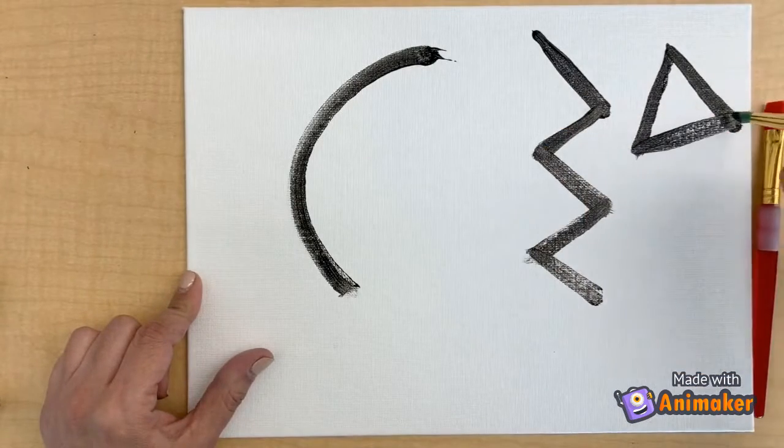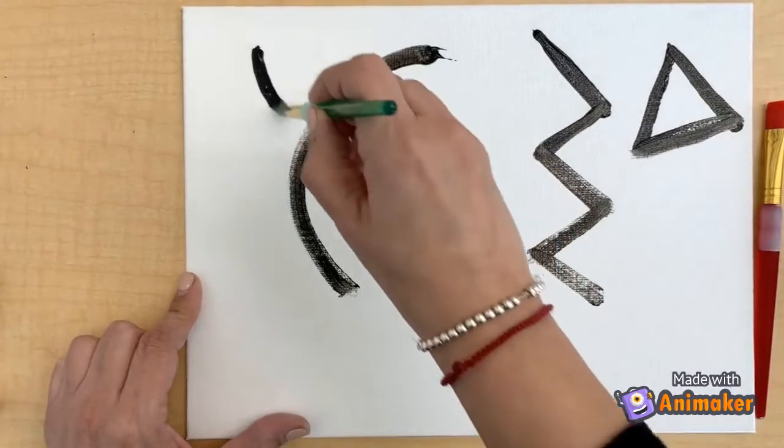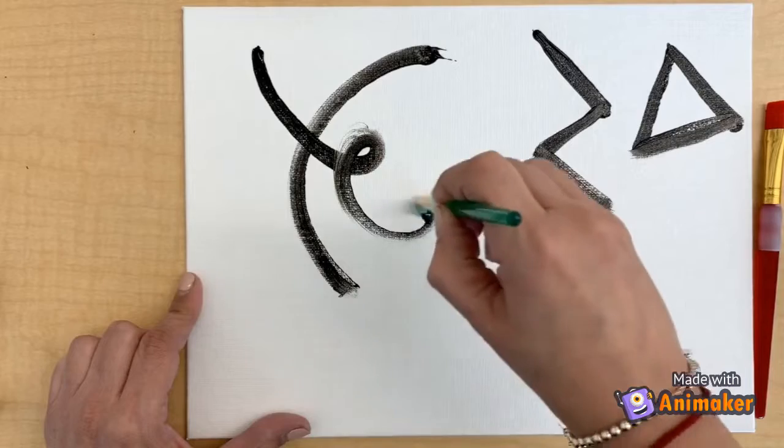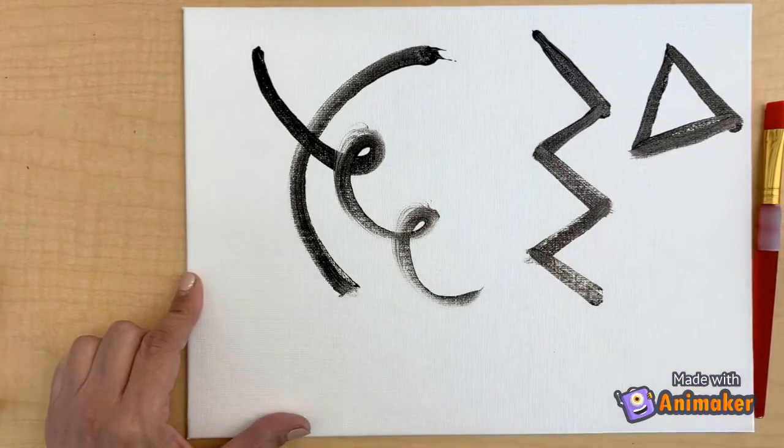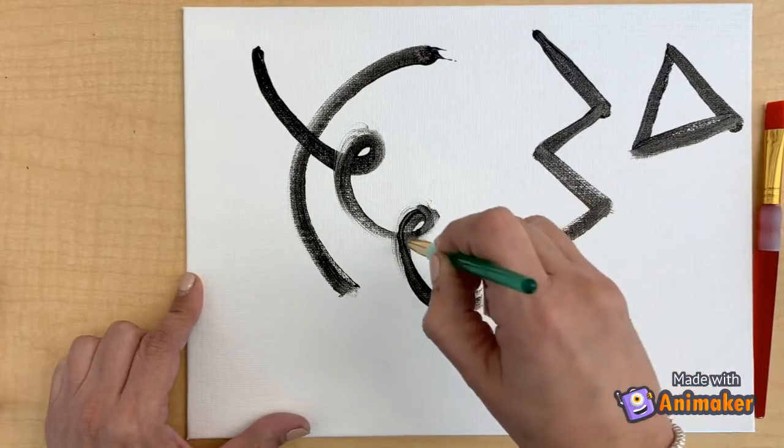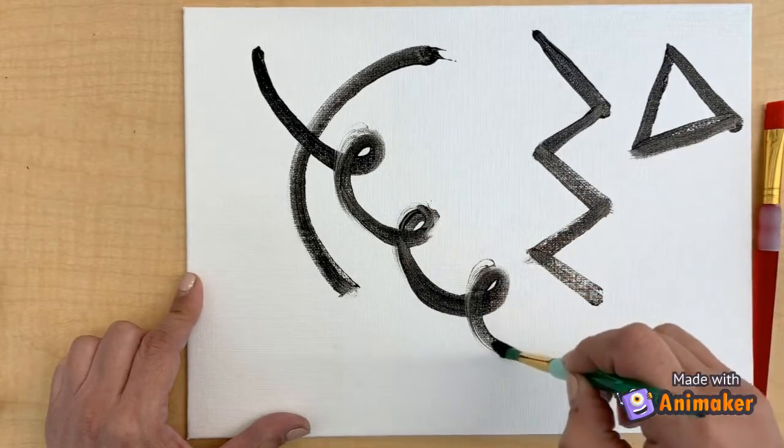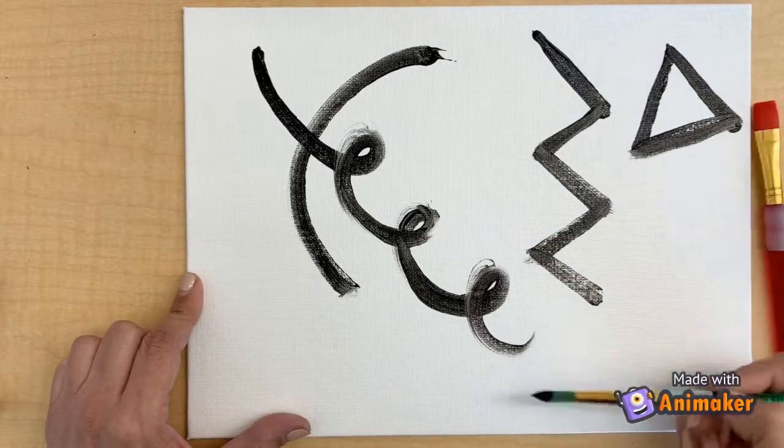Then you're going to think about possibly adding some shapes like triangles. Maybe you can add a circle. Curly lines. And this is how we're going to continue as we listen to the music, adding some design elements to our painting.